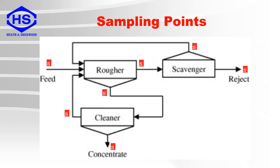These are typical sampling points in and around the concentrator which are used to supply an on-stream analyzer with sample. The feed, concentrate and reject streams should use metallurgical samplers, and the other streams can use process control samplers.